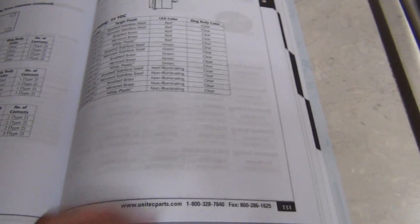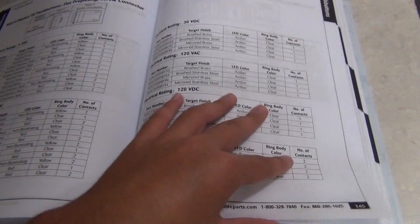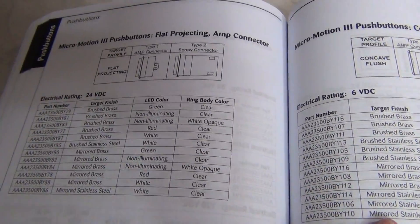Because there's a lot of push buttons. Here are some of the other ones. They have up to 120 AC/DC volts. Look, there are the two types: screw connector and the M connector.